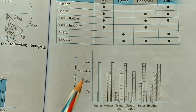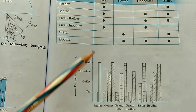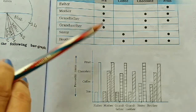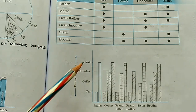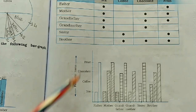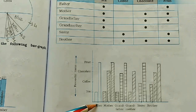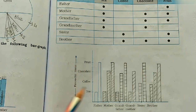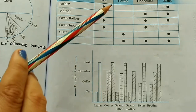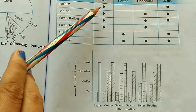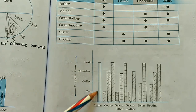Now see the bar graph. This bar graph is given here. According to this graph, we have to mention in these spaces the family members and the items they like. You can see fruit, chocolate, coffee, and tea are the favorite items on this side, and family members — mother, father, grandfather, grandmother, sister, and brother — are on this side. The first one is already done: father likes tea and fruits, so here two bars are drawn.